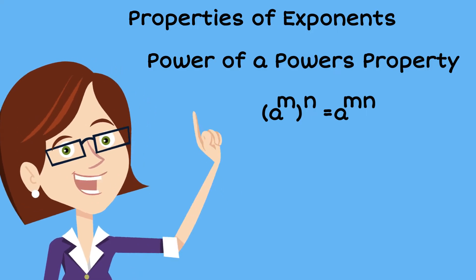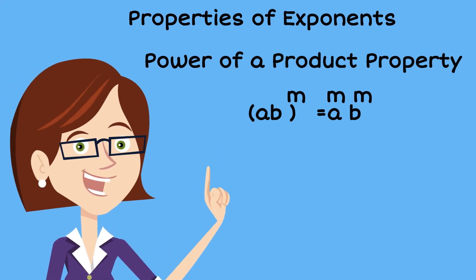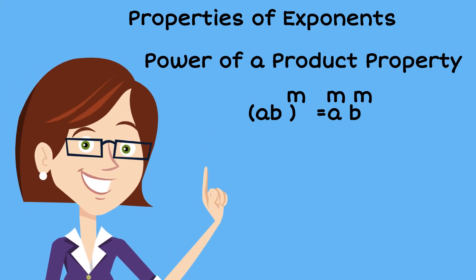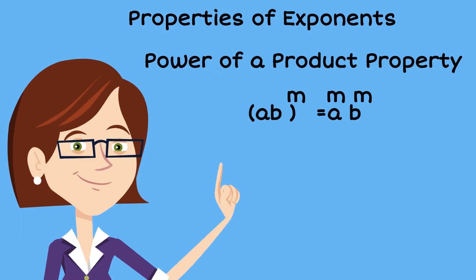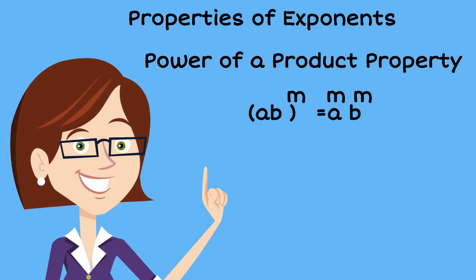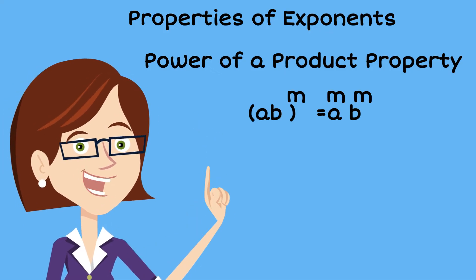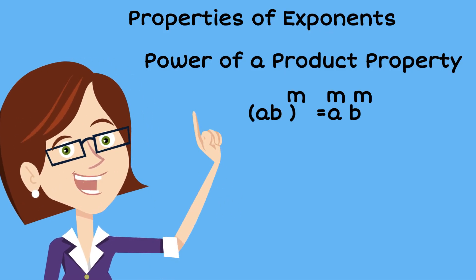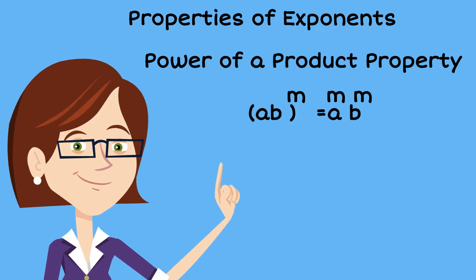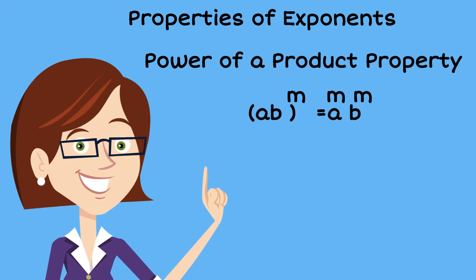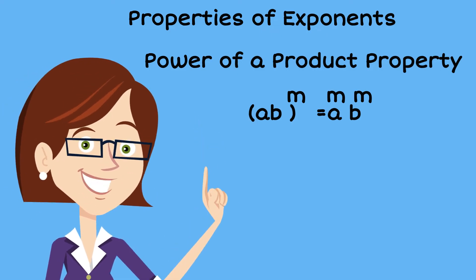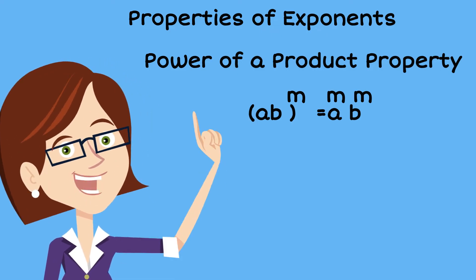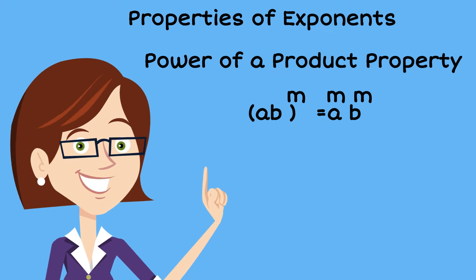The third one is the power of a product property. That's when you have the product ab, all quantity to the nth power. We can rewrite that as a to the m times b to the m.